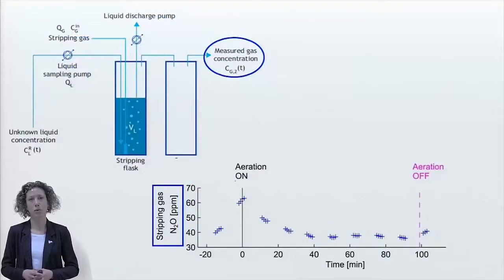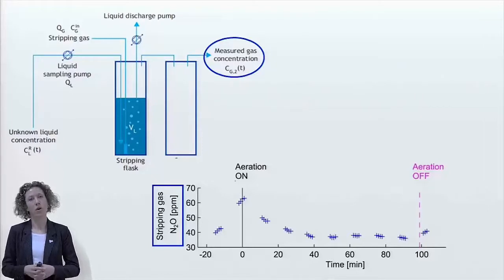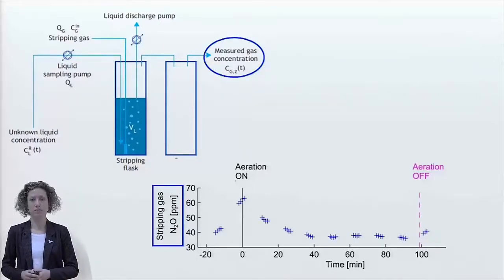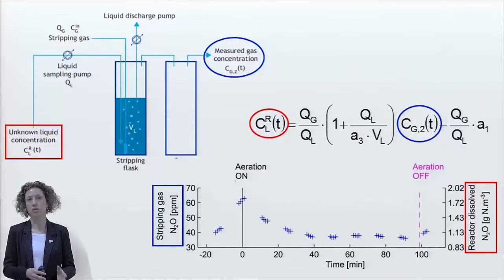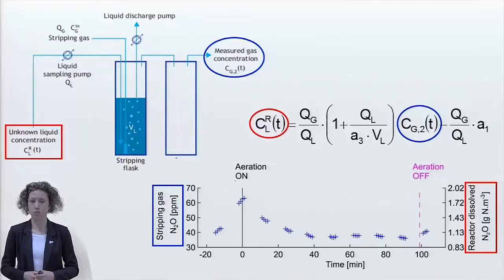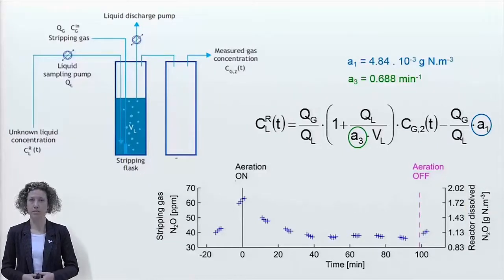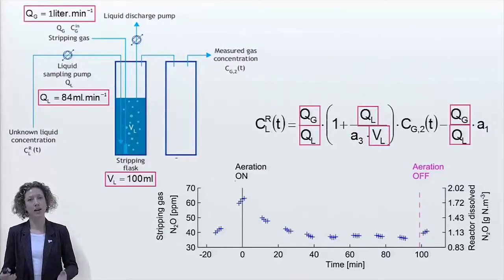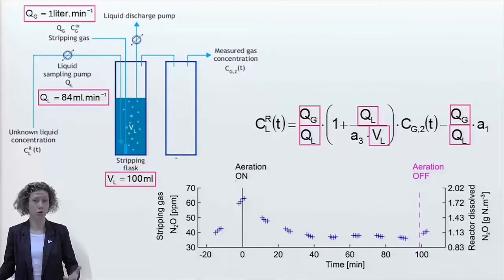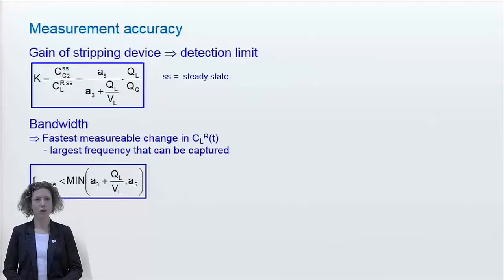Here we have a typical measurement profile from continuous N2O monitoring with the stripping device. These data are from a reactor which was operated with intermittent aeration, with alternating aerobic and anoxic periods. The relationship between the monitored gas phase concentration and the dissolved N2O concentration in the reactor is determined by the equation shown before, which contains the values of the parameters a1 and a3 determined in the batch stripping test. It also contains the values of the gas stripping flow rate, the sample liquid flow rate, and the volume of the liquid in the stripping flask, which are known for our specific setup.